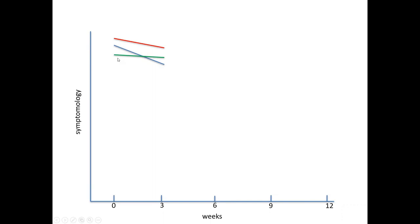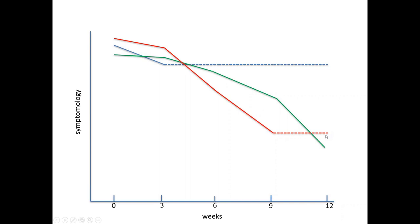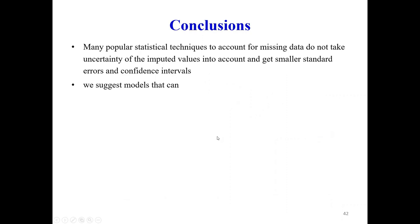In the last observation carried forward method, if I have three individuals measured at 0, 3, 6, 9, and 12 weeks, and symptoms reduce from week 0 to week 3 but the blue individual drops out, then the red drops out at week 9, at week 12 the green individual appears to have done much better than the red and blue. But this is not necessarily true. We are extending our method to account for missing data that has been imputed using a single imputation method, which is not necessarily correct.